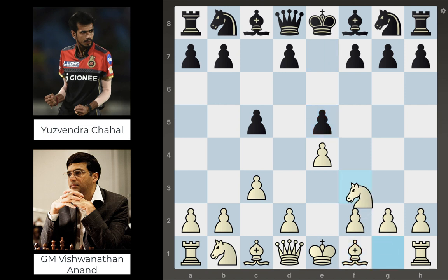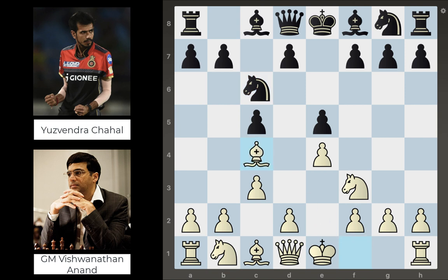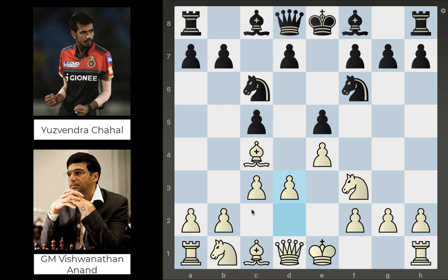Anand continues with knight to f3, getting his knight into the game. Knight c6, standard development. Then bishop c4, knight f6, and now Anand comes in with d3. He not only defends this pawn but also opens up the line for this dark-squared bishop to come out and deliver some attacks on the long diagonal.